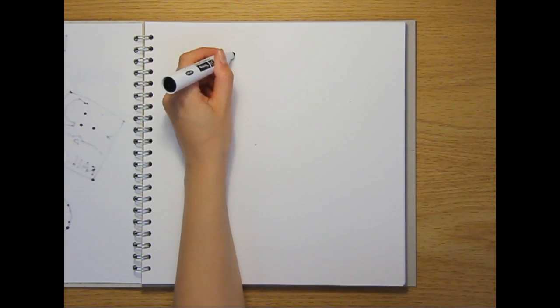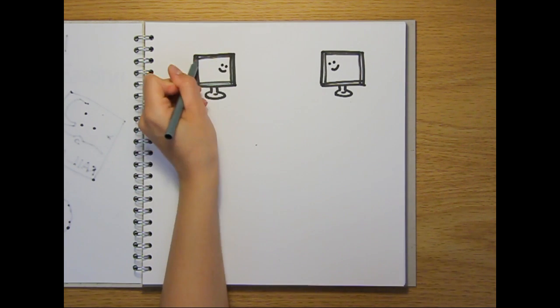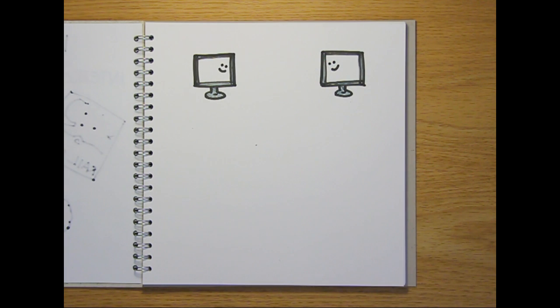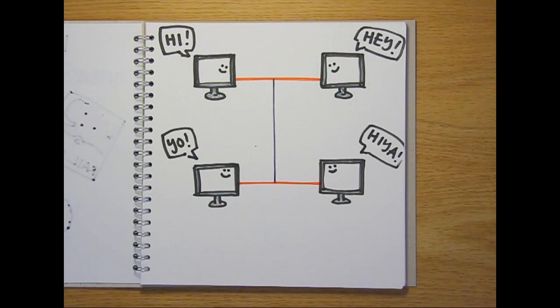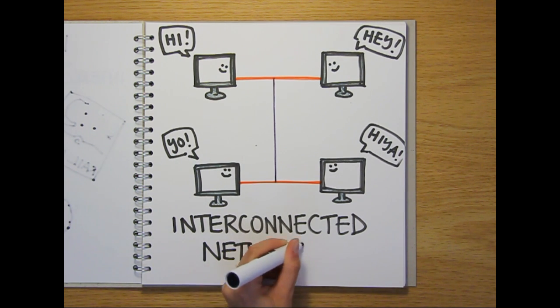A computer network consists of two or more computers linked together so that data can pass between them. In fact, the simplest example of a computer network is just two computers connected with a cable. And by doubling this setup, by having two pairs of computers connected, you've created an interconnected network, which is a very small version of the internet.